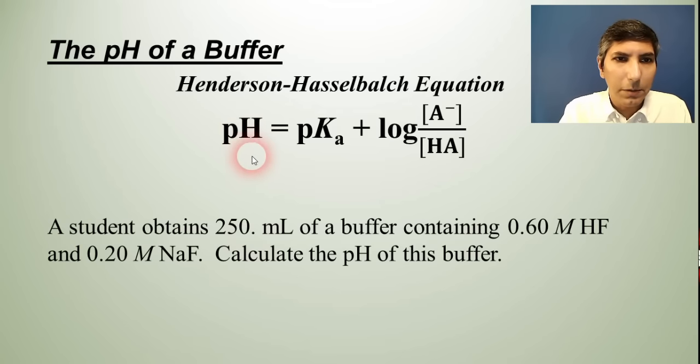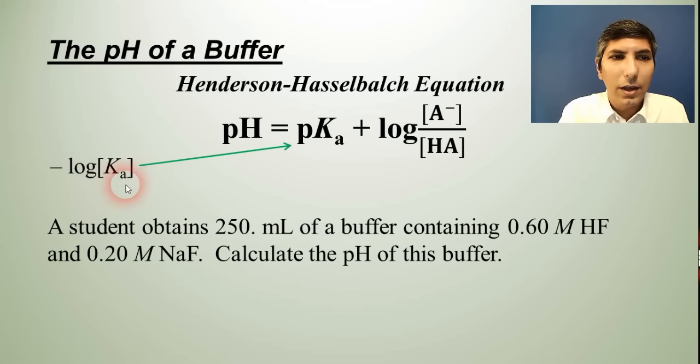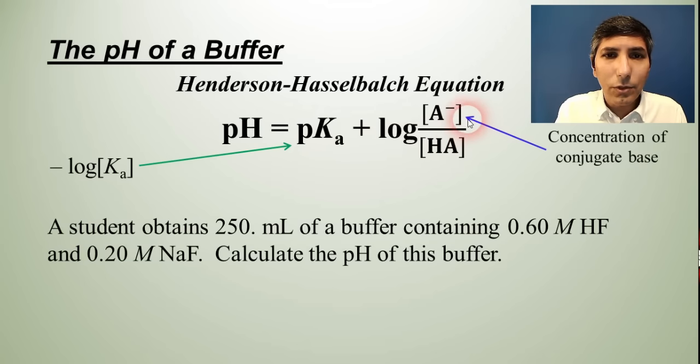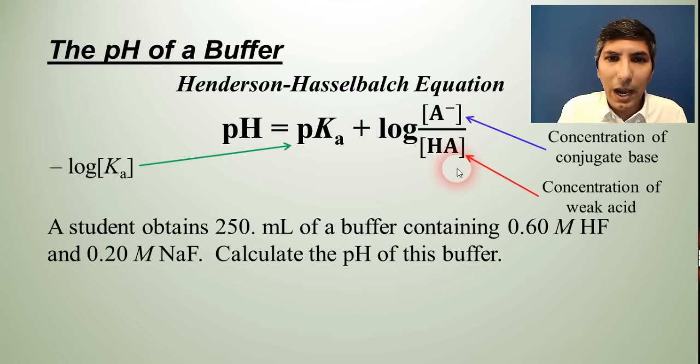And this is a very useful equation to help us to determine the pH of a buffer. The pH is the pH of the buffer. The pKa is the negative log of the Ka of that weak acid. So you'll need to know or look up the Ka in order to solve that part of the question. Now, the A⁻ concentration represents the concentration of the conjugate base in the buffer. Likewise, the HA in brackets represents the concentration of the weak acid in the buffer solution.